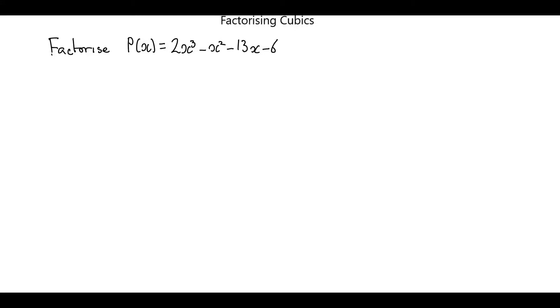In this video we're going to learn how to factorize a polynomial. The stages we're going to go through are: we're going to use the factor theorem to find a factor, then we're going to divide into the original polynomial using synthetic division to give ourselves a quadratic, and then we're going to factorize that quadratic in the normal way to give us three terms for our cubic.